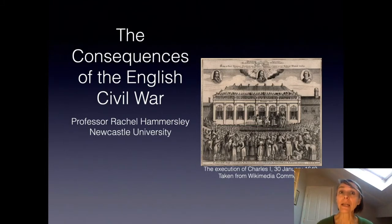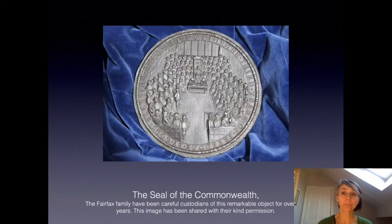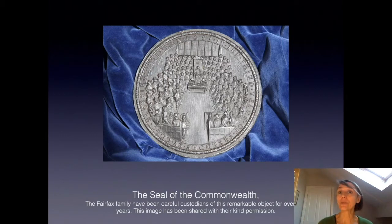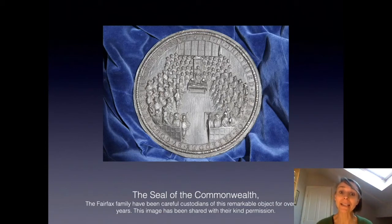The death of the King also had consequences for culture and society. Images of the King's head had to be removed from the royal seal, pictured here, from coins and even from tavern signs. And as you can see in the case of the seal, the King's head was replaced by Parliament sitting in session.